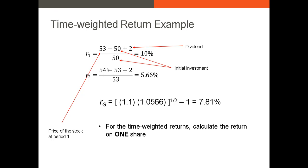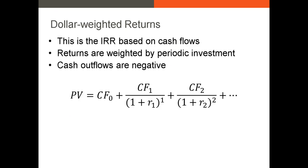The dollar-weighted return method, also called the money-weighted return method, is actually simpler — we essentially use the IRR formula. We calculate the cash inflows and outflows at each period in time and then apply IRR. We take our initial cash flow (initial investment), then calculate the total cash flow for each subsequent period — including any payments to purchase shares and any dividends received. We discount all future cash flows back to the present using the internal rate of return, setting the PV equal to zero.